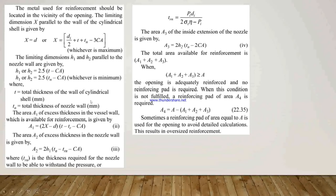Here T is the total thickness of the wall of the cylindrical shell, and TN is the total thickness of the nozzle wall. The area A1 of excess thickness in the vessel wall available for reinforcement is: A1 = (2X − D)·(T − TR − CA). The area A2 of excess thickness in the nozzle wall is: A2 = 2·H1·(TN − TRN − CA), where TRN is the thickness required for the nozzle wall to withstand pressure, calculated as TRN = P·Di / (2·S·η − P).